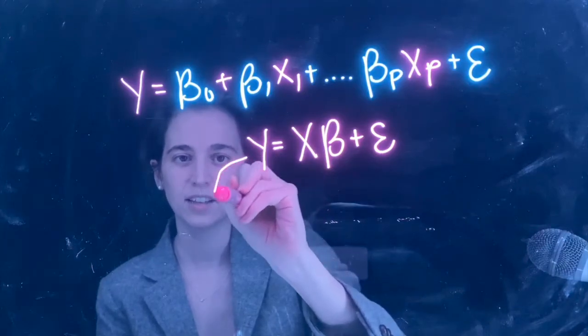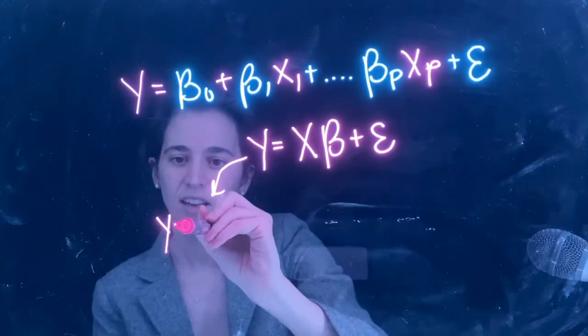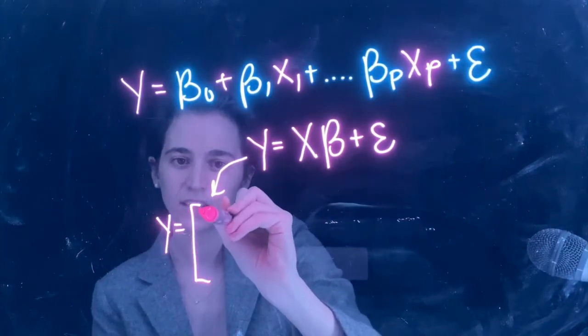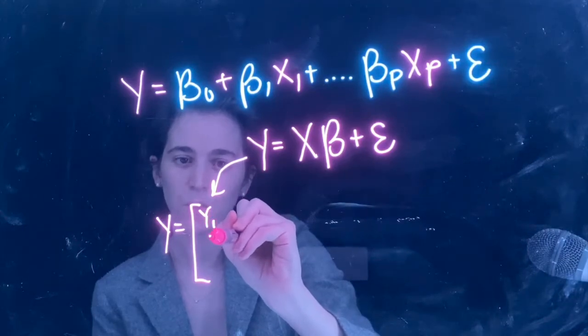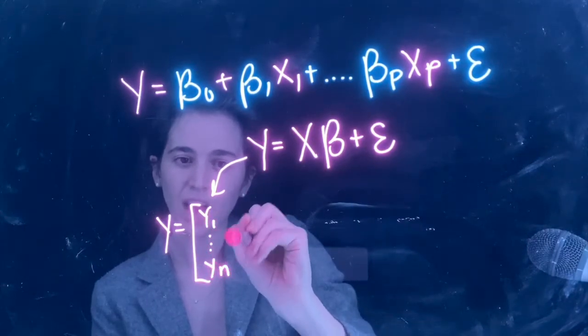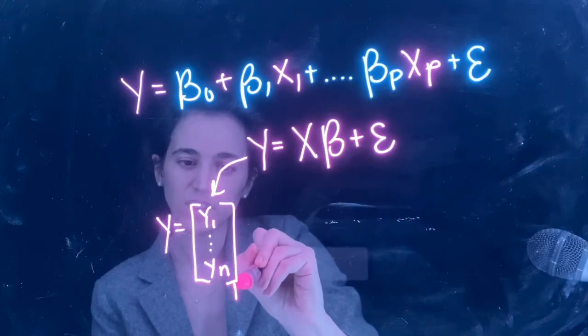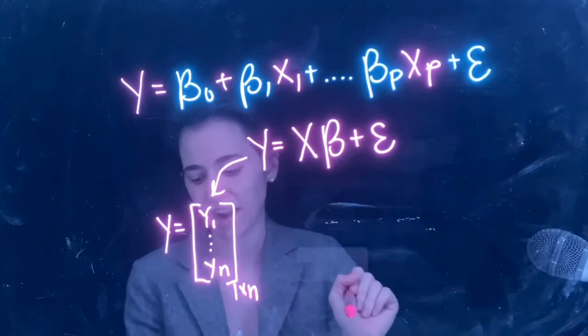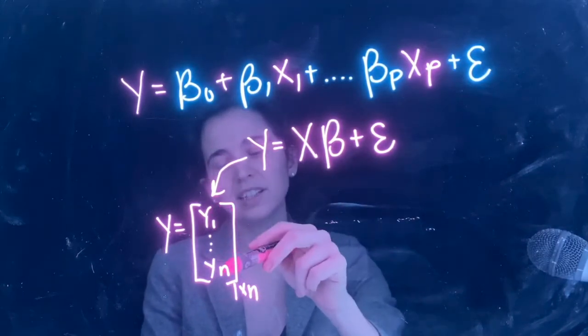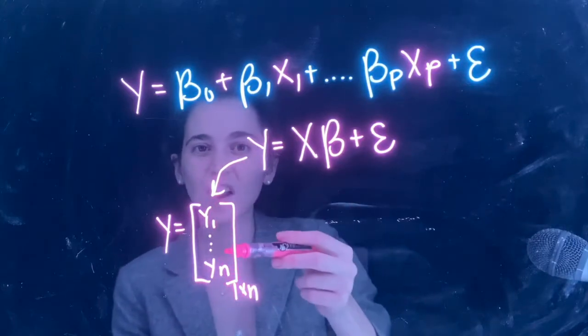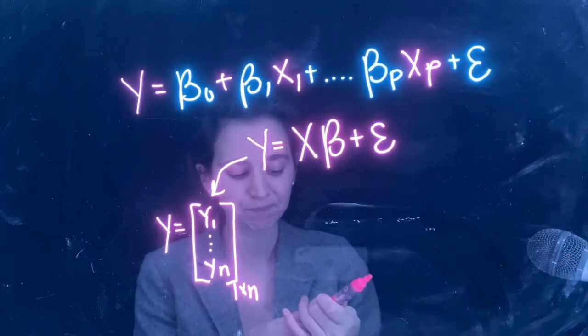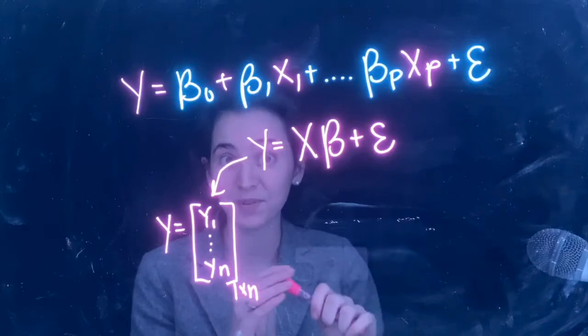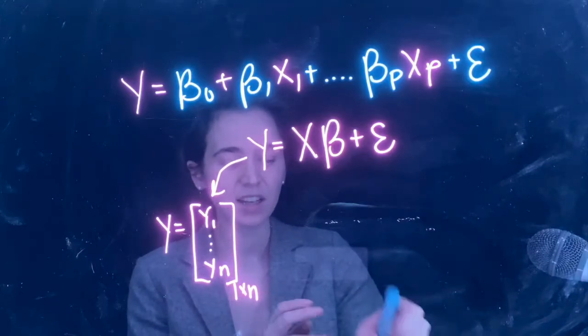This y here, let's write out each of these components. So y is going to be a vector that goes from y1 all the way to yn. So this is a 1 by n vector, our n observations, each of our observed outcomes for y.